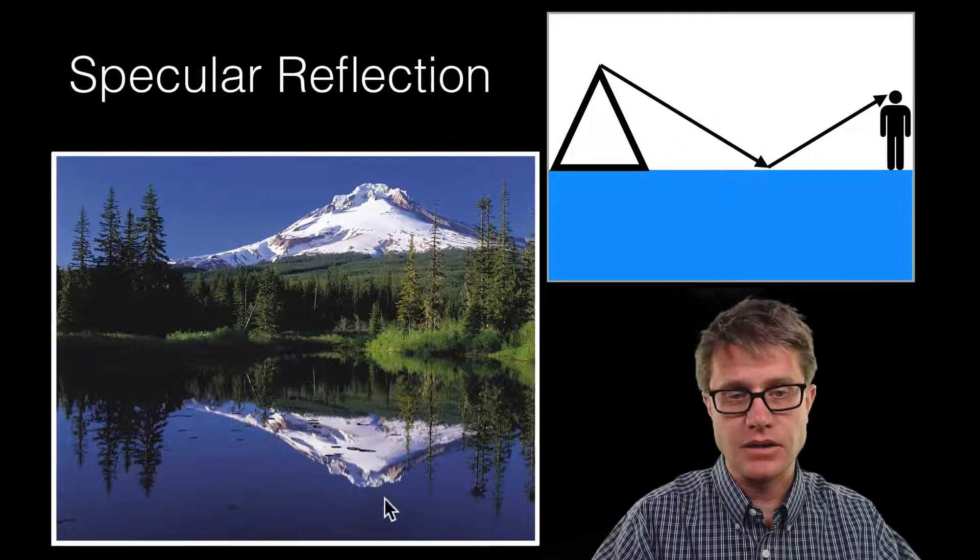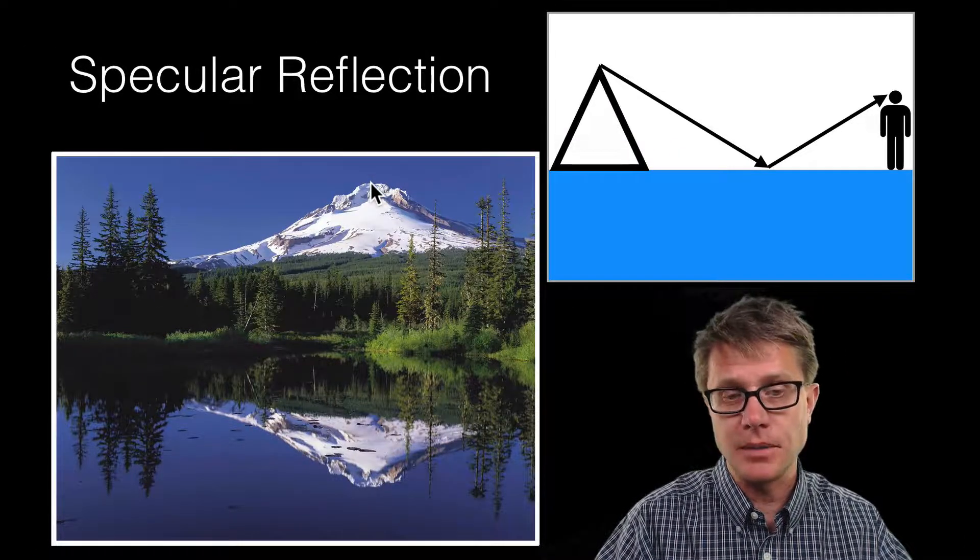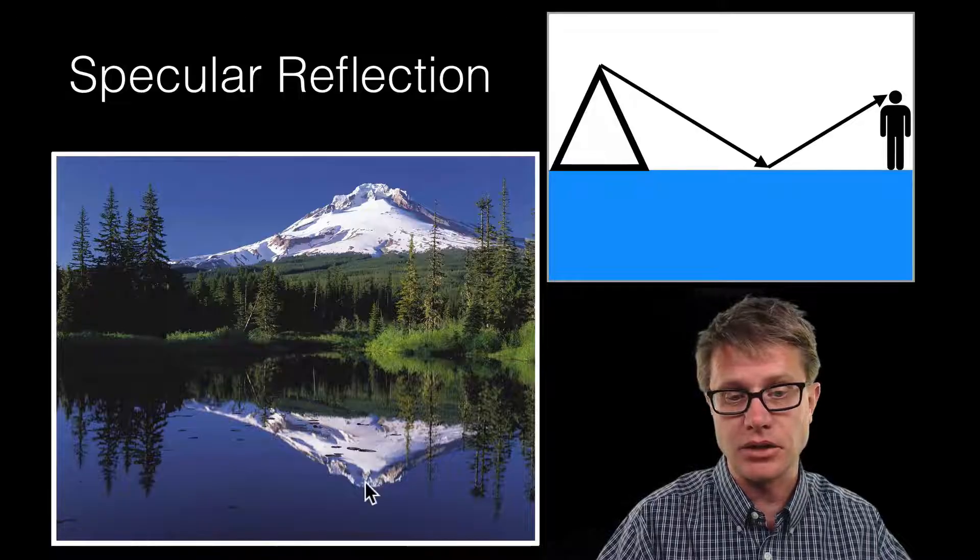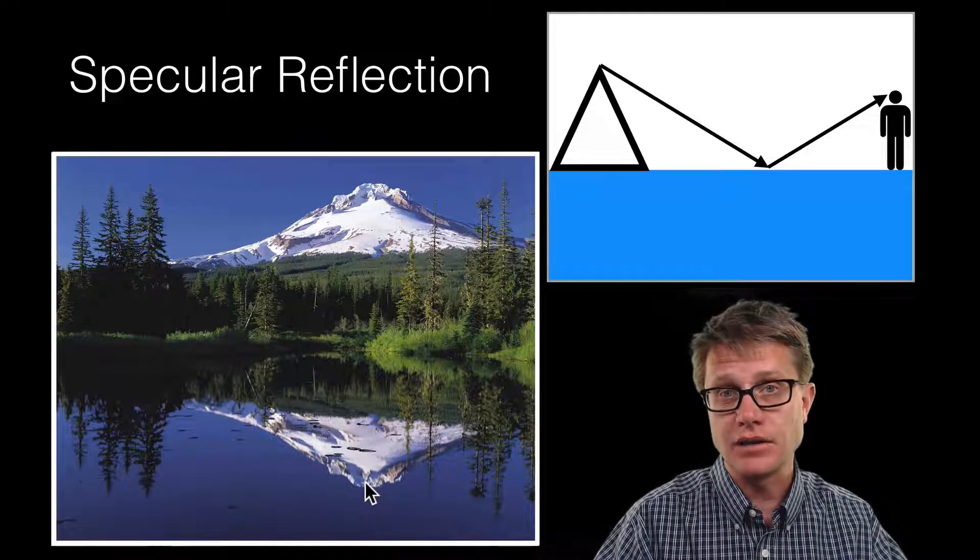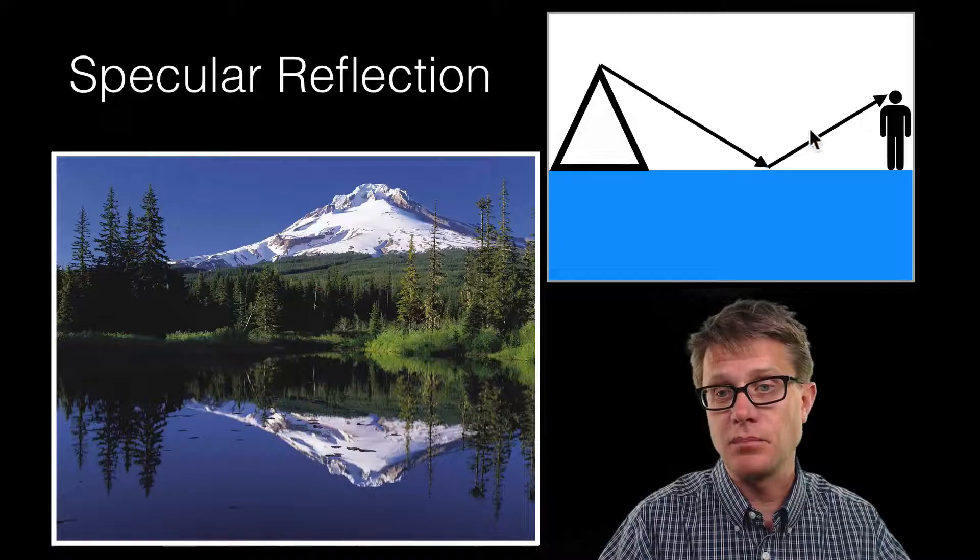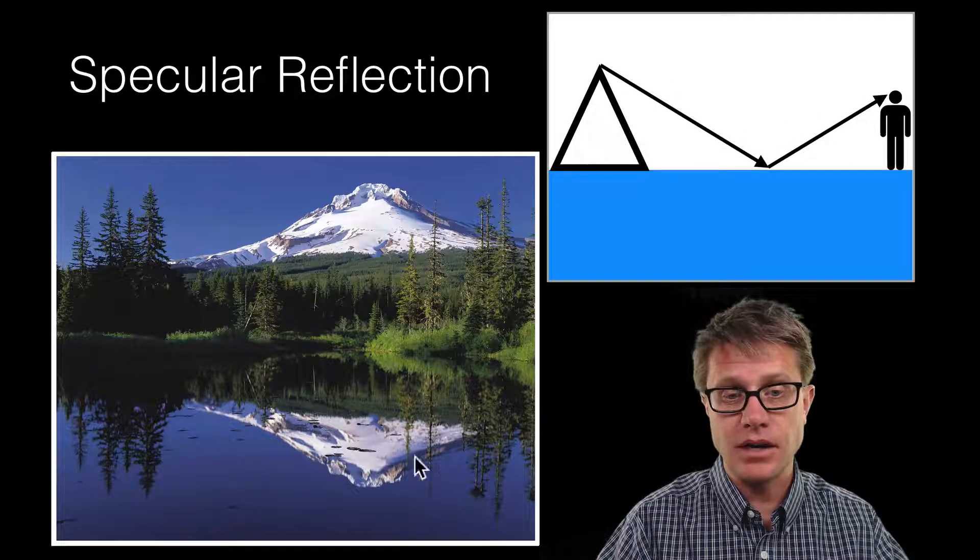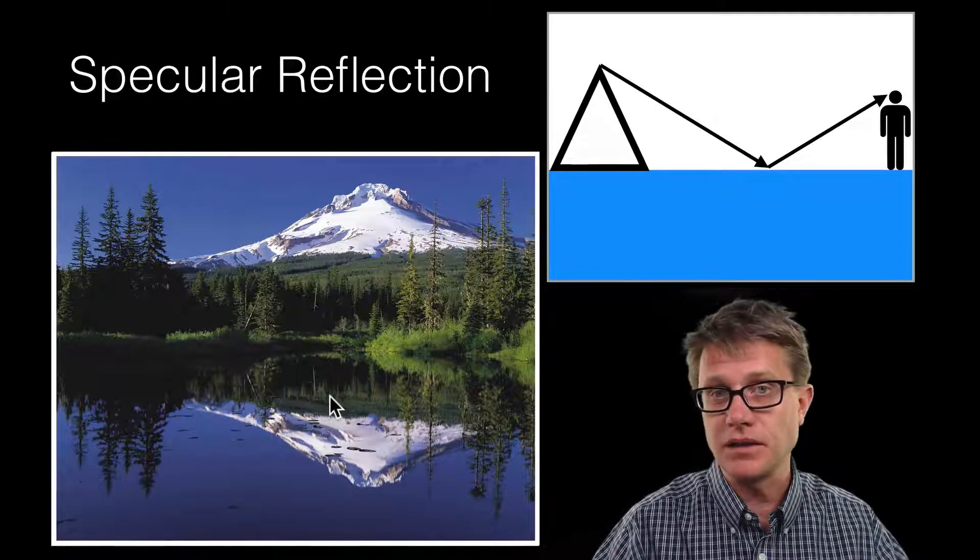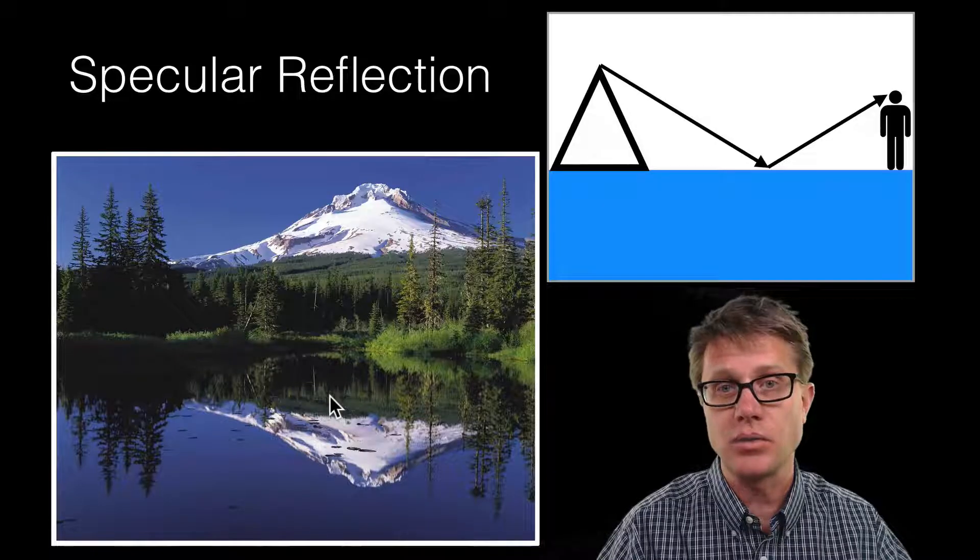If we look at this reflection of this mountain here, the light on the top is going to have specular reflection off of the surface and it is going to bounce to our eye. And so we are going to get a perfect mirror-like bounce. And that is why the image in the water is going to be exactly the same as the image that we see with just our naked eye.